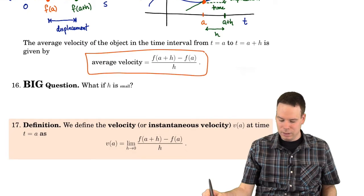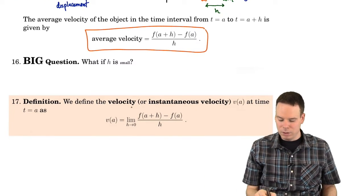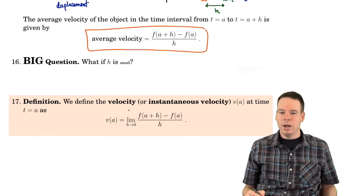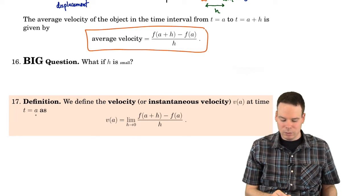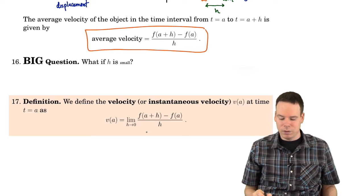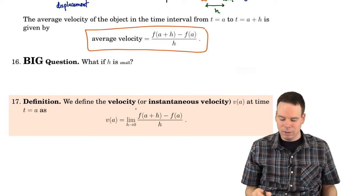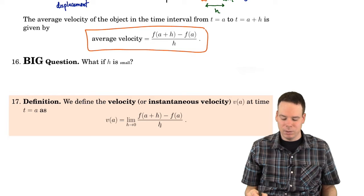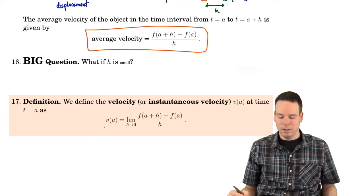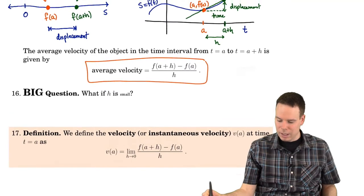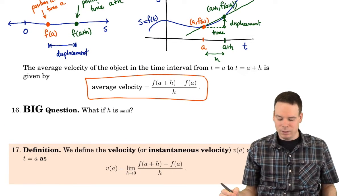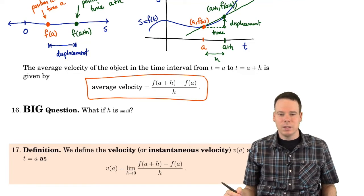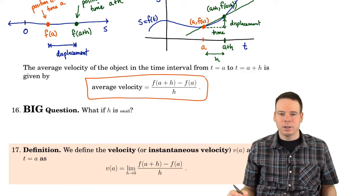Here we're just measuring displacement over smaller time intervals. We expect the slope of the secant lines for h to be small to approach the instantaneous velocity of the object. And that's what we're going to define. The instantaneous velocity, or the velocity for short, of the object at time t equals a is the limiting value of the average velocities as you take the time interval smaller and smaller and smaller. We've already seen that we can interpret these average velocities as slopes of secant lines. So you can interpret the instantaneous velocity as the slope of the tangent line. The instantaneous velocity will be the slope of the tangent line to the position function at the point in question.